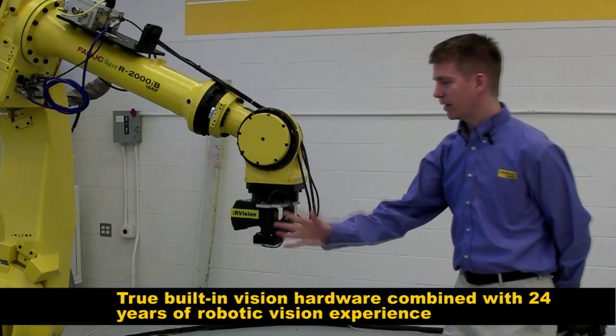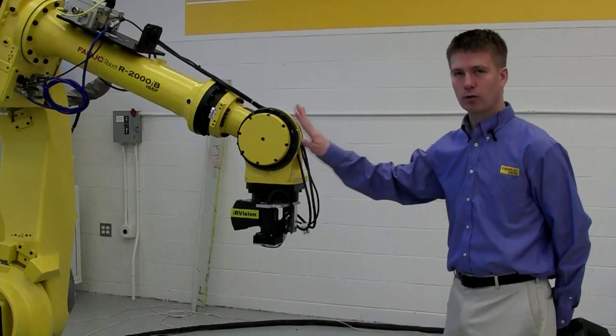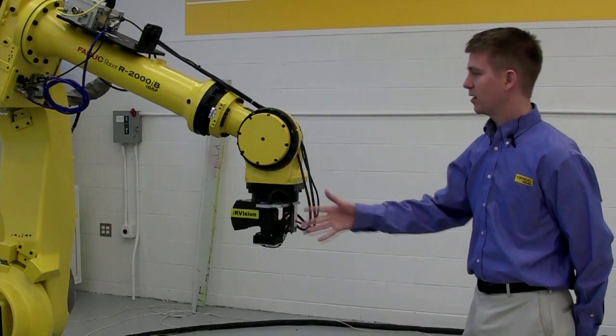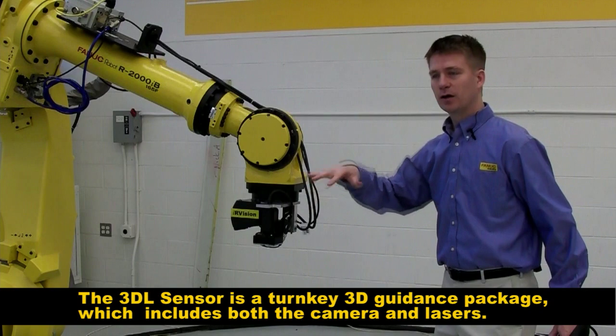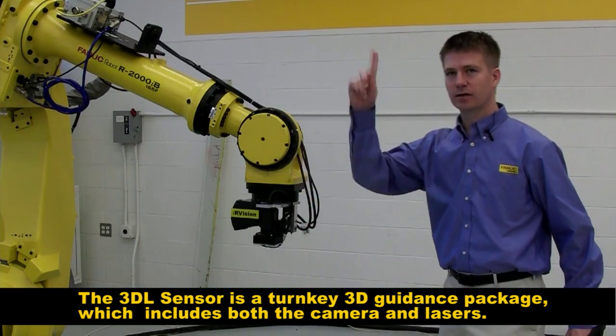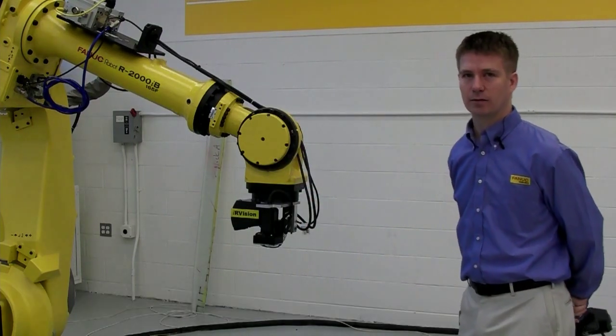What I'm going to do is calibrate this 3DL sensor so that the robot knows where the sensor is mounted to its tooling. That way wherever the robot positions this sensor, the 3DL sensor will be calibrated.